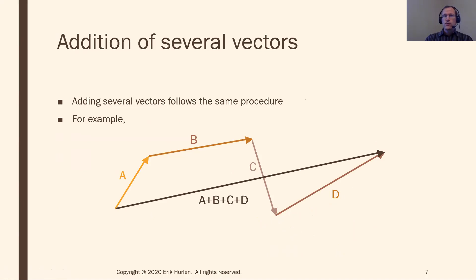If you have more than two vectors to add together, the procedure is the same. Start by drawing vector a. Wherever a ends, that's where b starts. Wherever b ends, that's where c starts. Wherever c ends, that's where d starts, and so on. The resultant vector goes from where a began to where d ended — that long vector is a plus b plus c plus d.